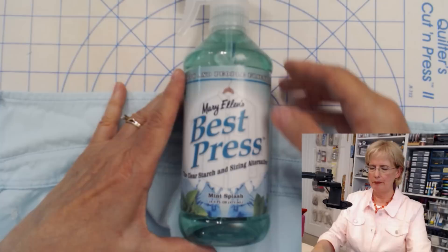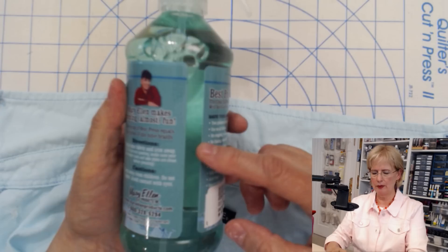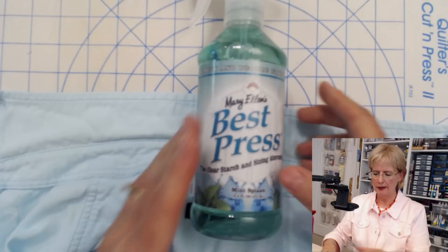It is a clear starch and sizing alternative. The cool thing about this is it comes in a clear bottle and so you can always tell how much you have left because you can see. So this is a brand new bottle.